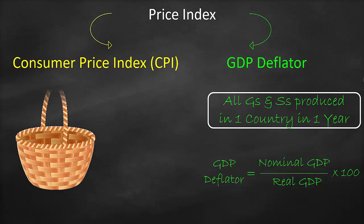With the consumer price index, we have a basket of goods and services. The idea behind this basket is that we want to measure inflation — changes in prices — so we need to fix the quantity. In order to measure inflation, we fix the quantity, and in this basket we include the most common consumer goods. We don't include all consumer goods, only the most common ones.